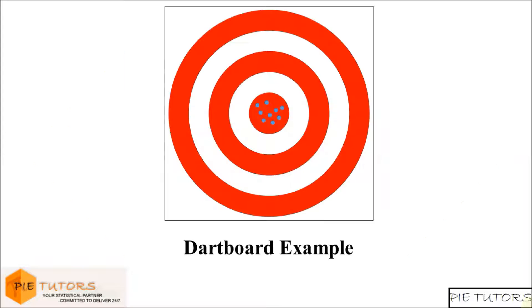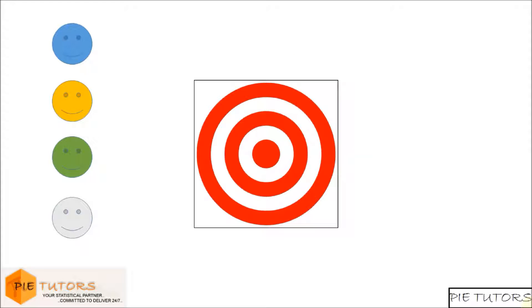For example, let us consider a scenario where there are four people, and they are required to fire bullets at the center of the dartboard. The goal of this task is to fire all the bullets towards the center of the dartboard.